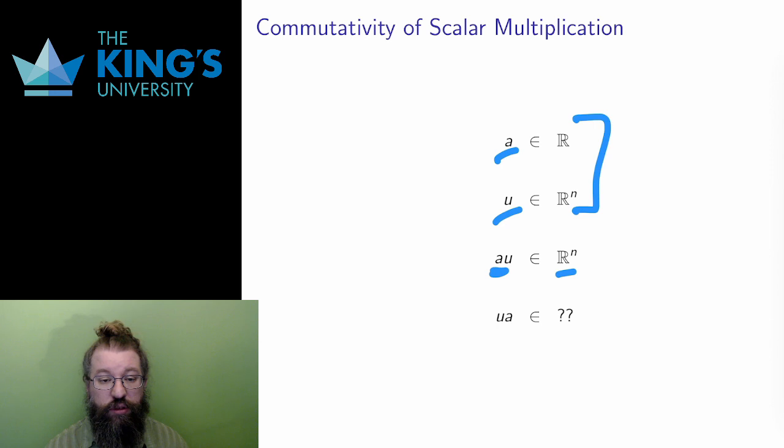Commutativity would ask about the other way around, u times a. However, here I must just stop. This operation isn't even defined. When I defined scalar multiplication, I said that the convention is to write the scalar on the left and the vector on the right. I don't have any operation at all with a vector on the left and a scalar on the right.